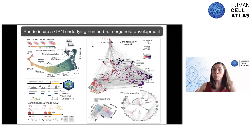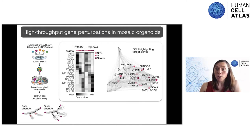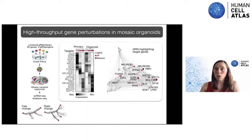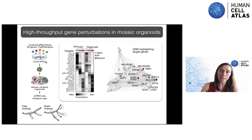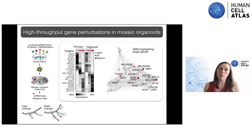We wanted to perturb this network and understand the role of these different transcription factors using a multiplex, higher-throughput approach rather than going gene by gene. We used the CropSeq approach, targeting 20 transcription factors each with very specific expression during cortex development — not just in the organoid cortex but also the primary human cortex. We infected inducible Cas9 iPS cells with lentiviruses containing three guides per gene, made mosaic brain organoids, and performed single-cell RNA-seq and amplicon sequencing to measure transcriptomes, guide abundances, fate changes, and differential expression.